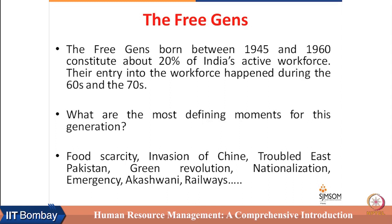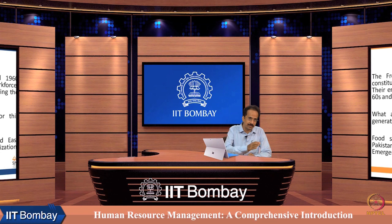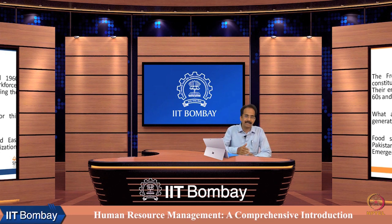That was the time of a major food crisis in India, when the green revolution just started. The invasion of China was a major crisis of that time. East Pakistan was formed — this generation has seen East Pakistan being formed. Green revolution started in the 70s, nationalization became a major step which defined politics as well as economics, and the emergency was imposed in the 70s.